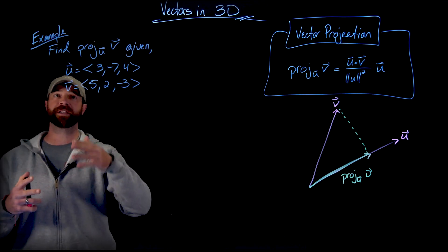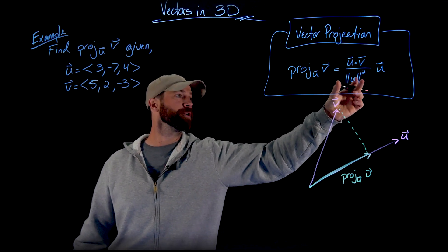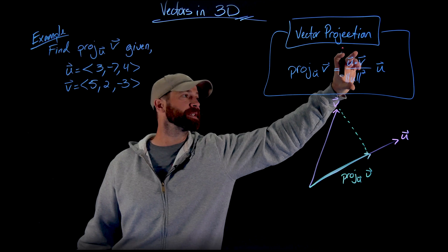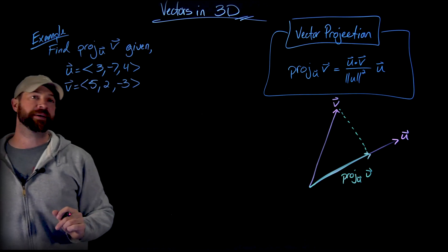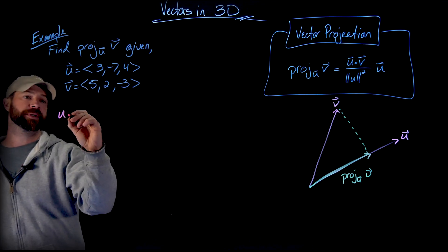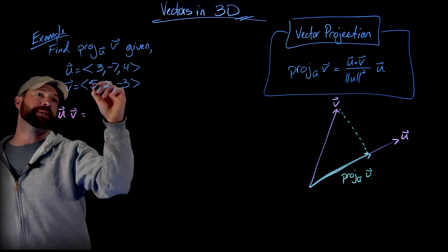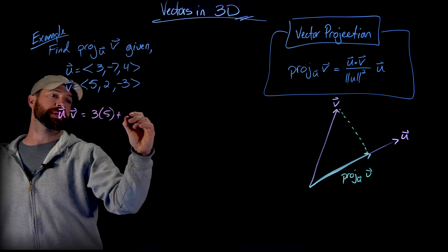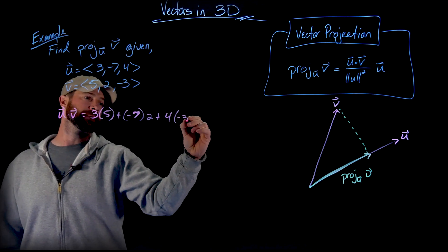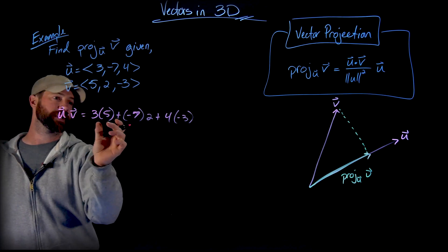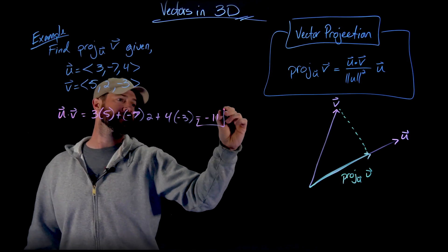So in our example here, we're just going to find the projection onto U of the vector V. What I'm going to do is work through the steps of this formula. All I want you to do is first calculate this scalar here with a dot product and the square of the magnitude of U, and then we're going to multiply that by vector U. So the dot product is pretty straightforward. The vector U dot V is 3 times 5 plus negative 7 times 2 plus 4 times negative 3. 15 minus 14 minus 12 gives me a value of negative 11 for the dot product.